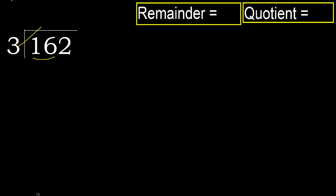Multiply by which number is nearest to 16 but not greater. 3 multiply by 6 is 18 — 18 is greater. Multiply by 5 is 15 — 15 is not greater. Subtract.